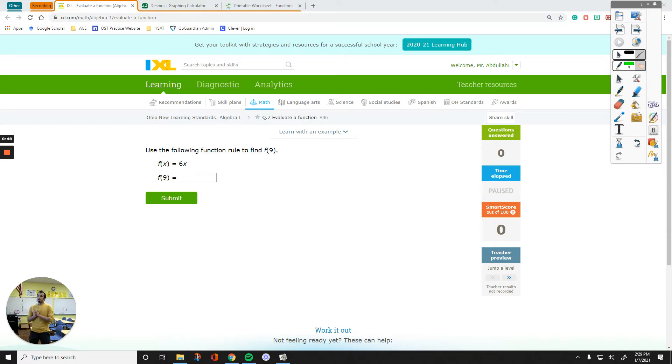The first question says use the following function. Now we know that we are dealing with a function to find the value of f of 9. So f of 9 basically tells us wherever you see that x, like here and here, plug in that number, plug in that 9. So I am rewriting my function first.